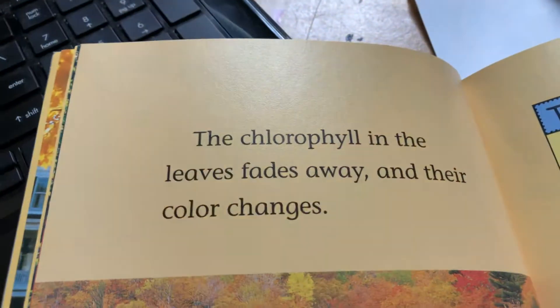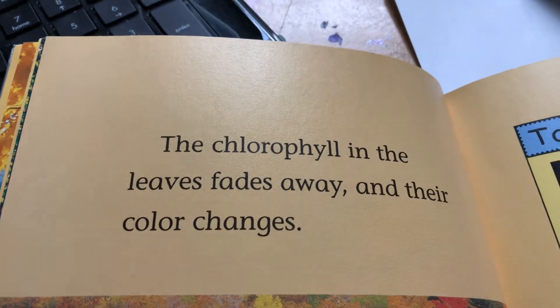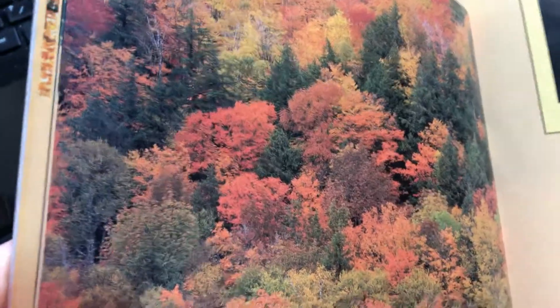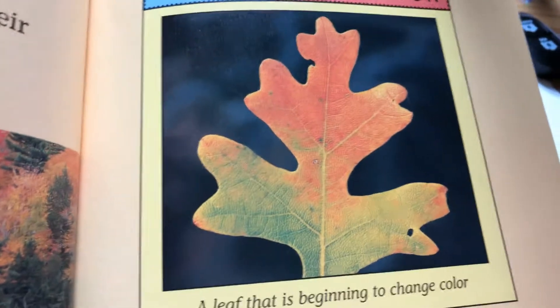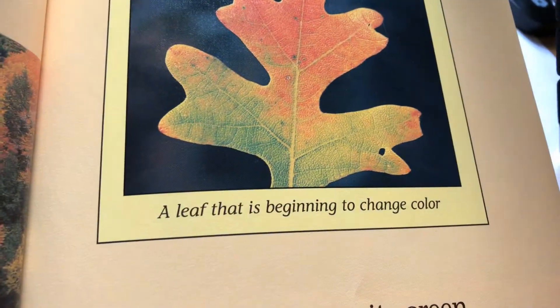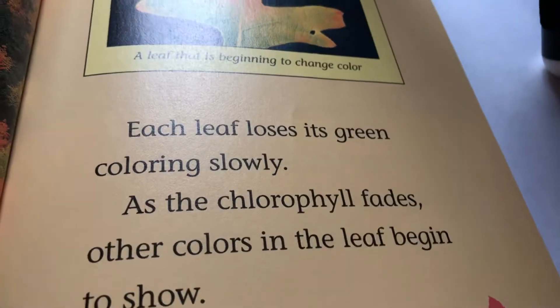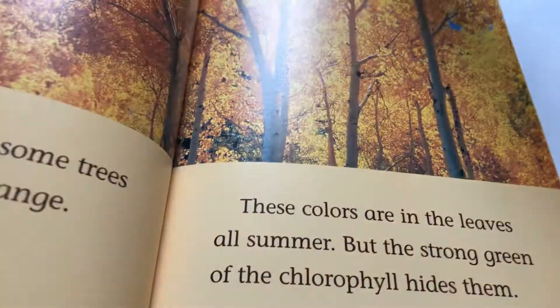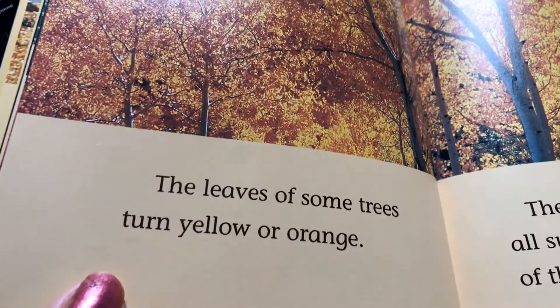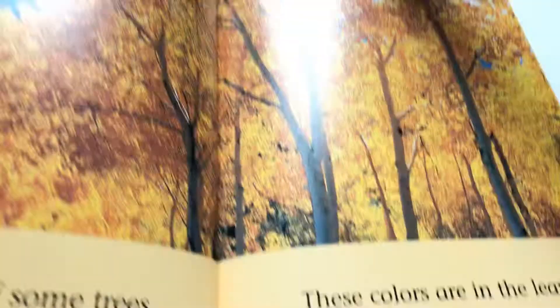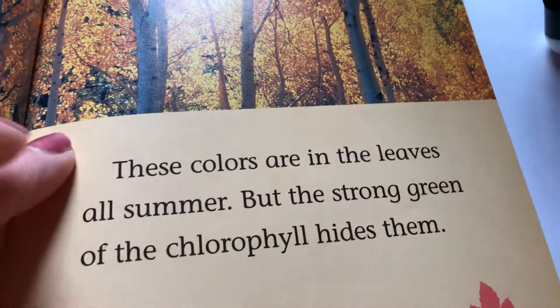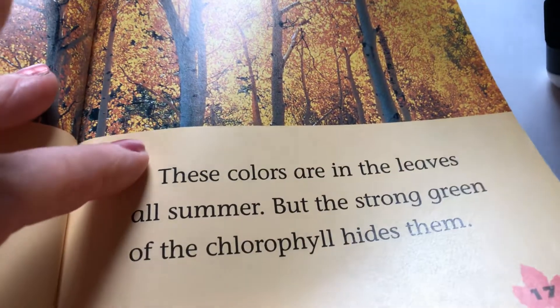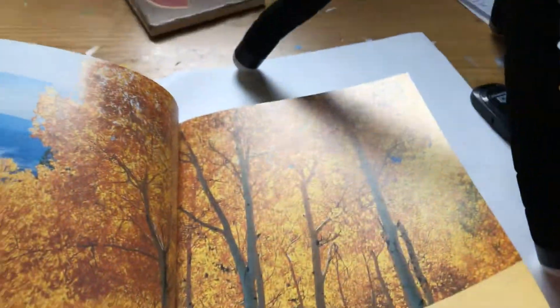It's not that it's getting colder out — it's that there's less light. The chlorophyll, or the green in the leaves, fades away and their color changes. Mrs. Corner calls that changing to their true colors — no more wearing camouflage! As the green fades away, each leaf slowly loses its green color. The colors of yellow, orange, or tan have been in the leaves all summer, but the strong green of the chlorophyll was hiding them.